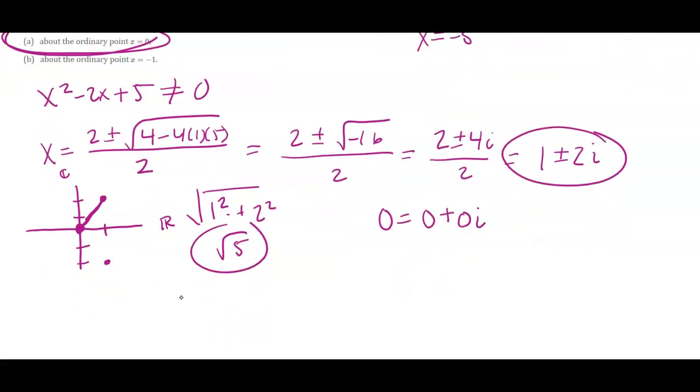If I need to find the radius of convergence to X equals negative 1, then that would be the square root of 2 squared plus 2 squared, which is the square root of 8 or 2 square roots of 2 would be my radius of convergence there.